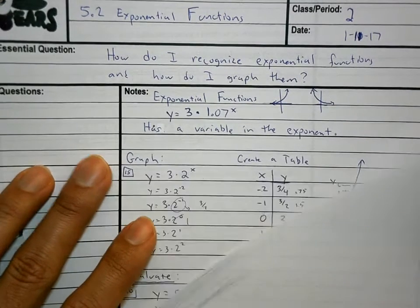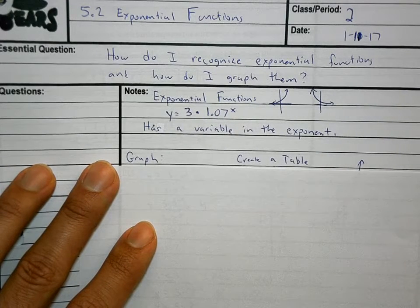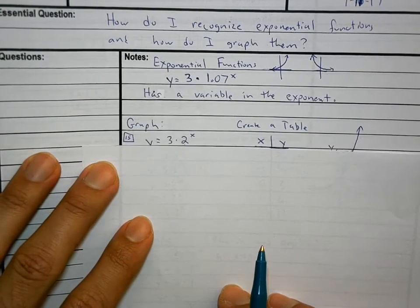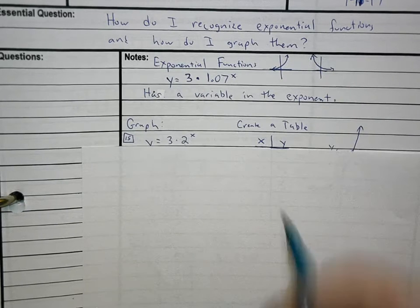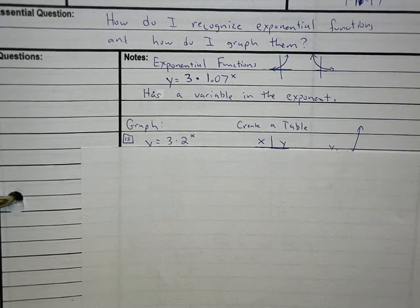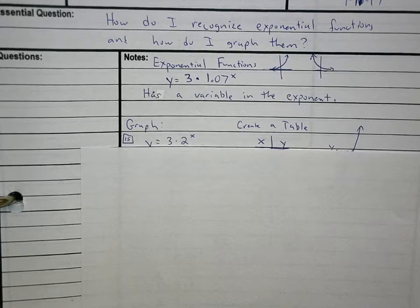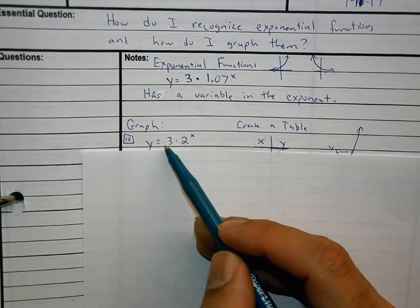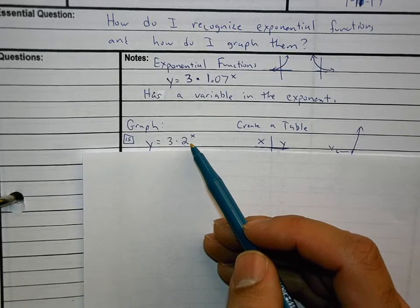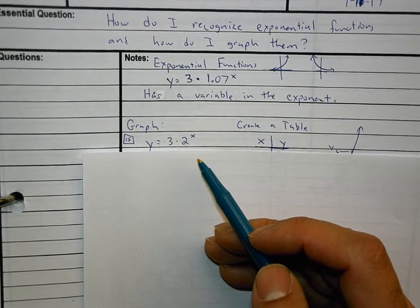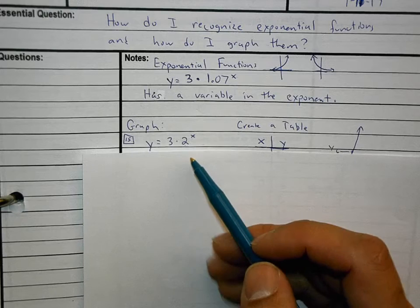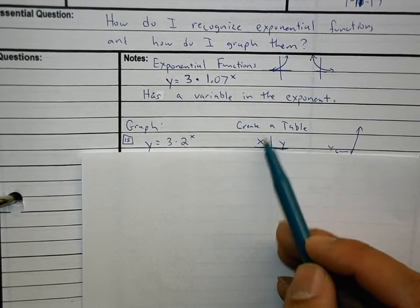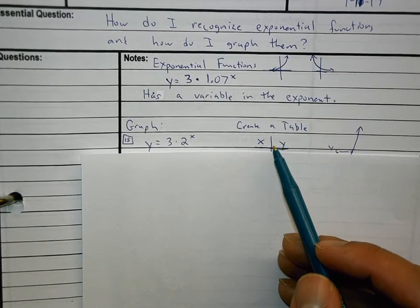There are questions on your worksheet about whether something is exponential or not, so look for the variable in the exponent. Now, how do we graph exponentials? The best thing you can do is create a table. If I ask you to graph y equals 3 times 2 to the x, you're going to create a table with an x column and a y column and pick certain numbers for x.